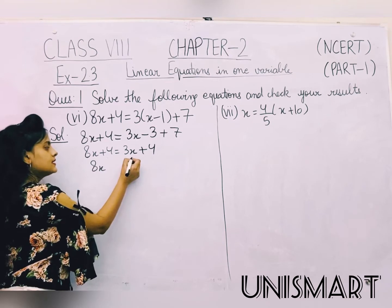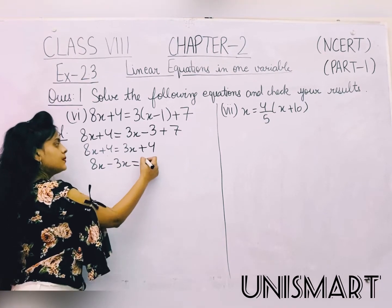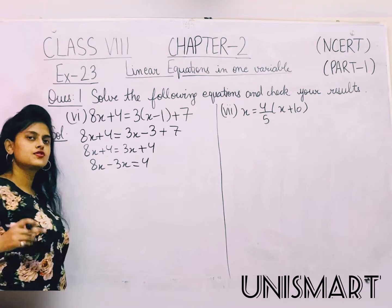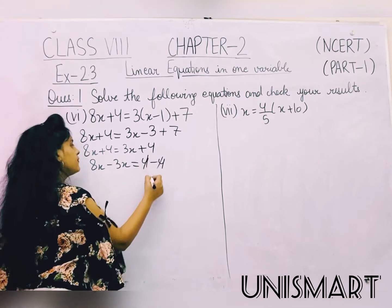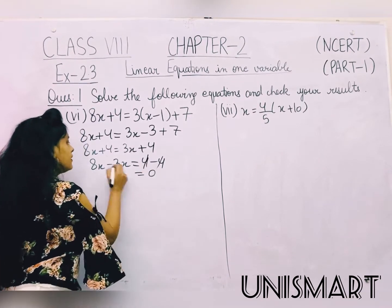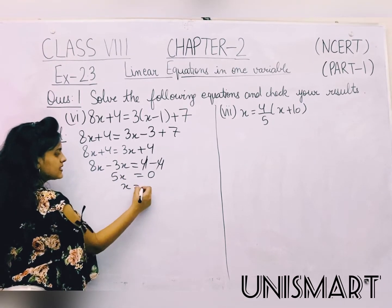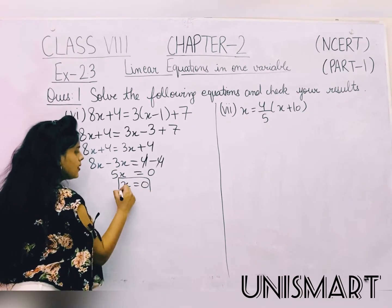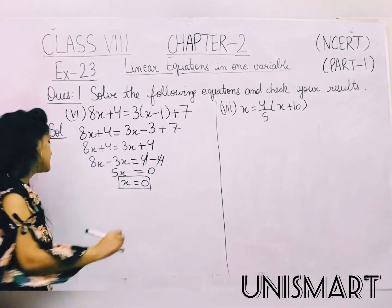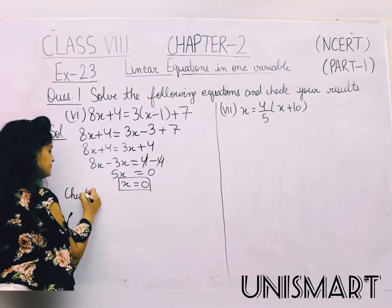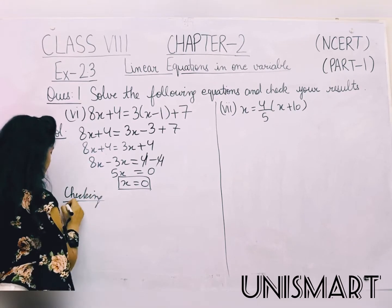Shifting 3x to the left-hand side: 8x minus 3x is equal to 4 minus 4, giving 5x is equal to 0. So x is equal to 0.